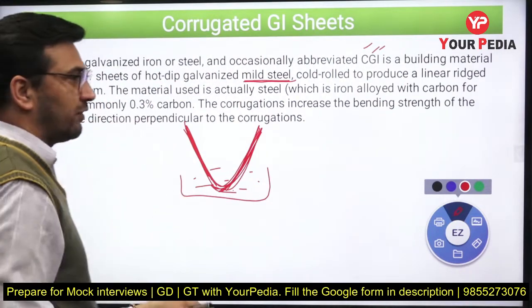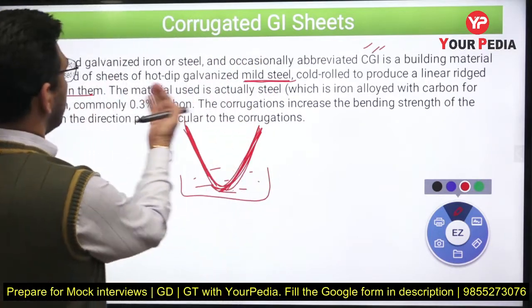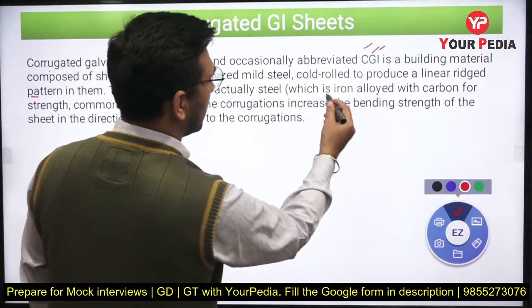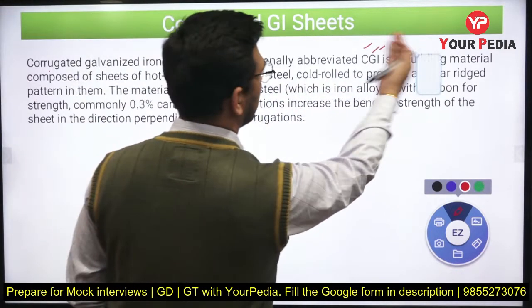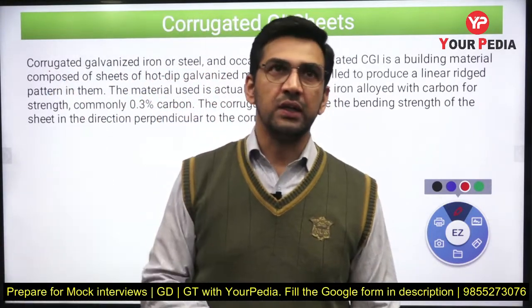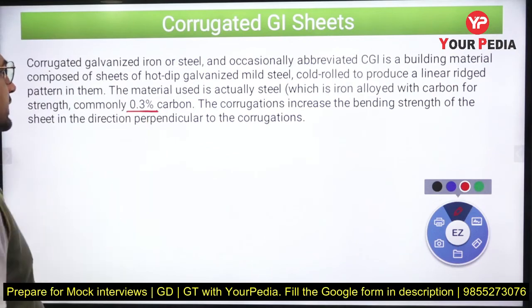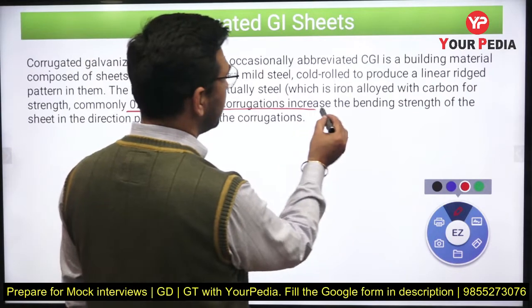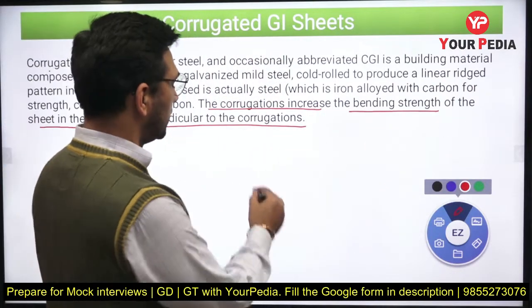These sheets are cold-rolled to produce a linear ridge pattern. Cold rolling is used because when you deform the sheet to change its shape, it is done in the cold condition. The material used is usually mild steel — iron alloyed with carbon for strength — which is a very common composition, having roughly about 0.25 to 0.3 percent carbon. This is typical of mild steel used in most construction applications.